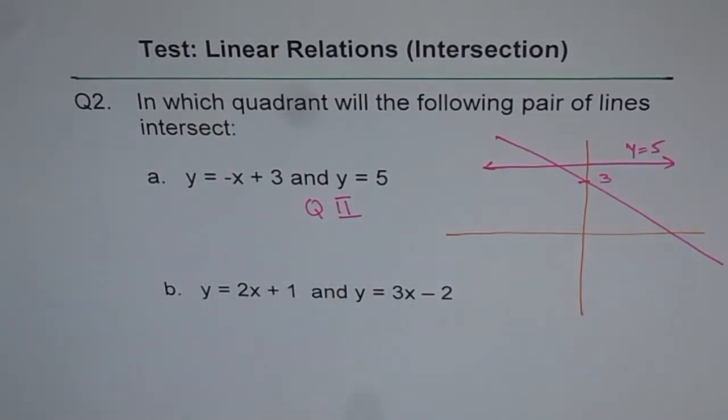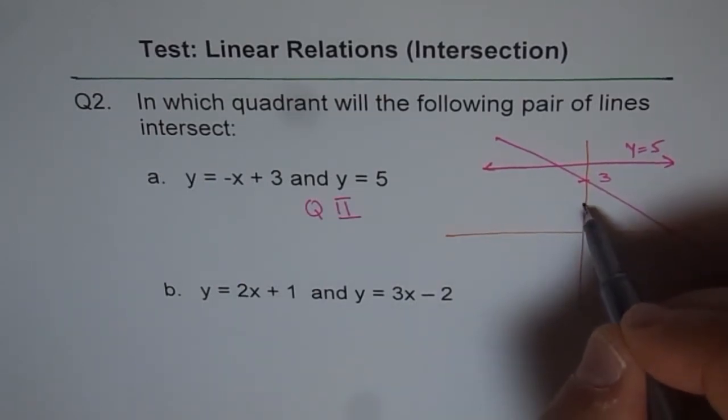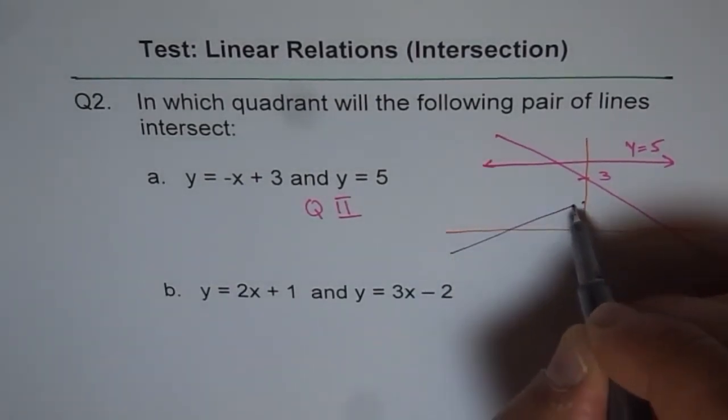Now how about the other set of lines. Both have positive slope. Both have positive slope. One intercept, the one which is at 1 is less steeper. That is less steeper. So I will draw a line like this.